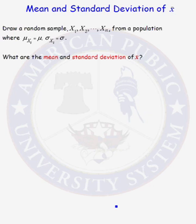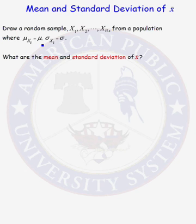In this lesson, we are going to develop the mean and the standard deviation of x-bar, our sample mean. A sample mean comes from drawing a random sample, x1, x2, up to xn, from a population. We are going to say that the mean of every random variable in the parent population is equal to mu, and the standard deviation of every random variable in our parent population is equal to sigma.